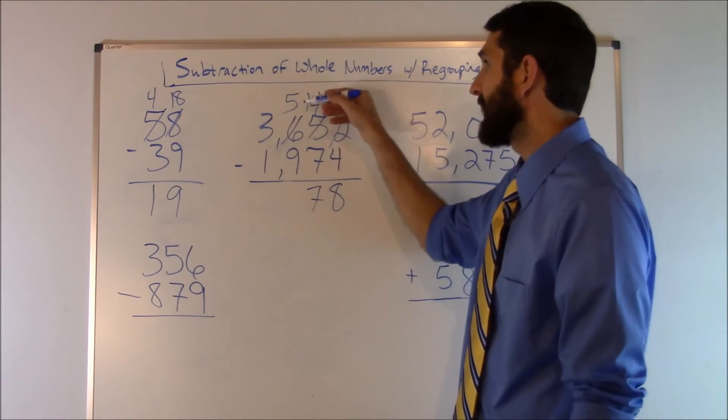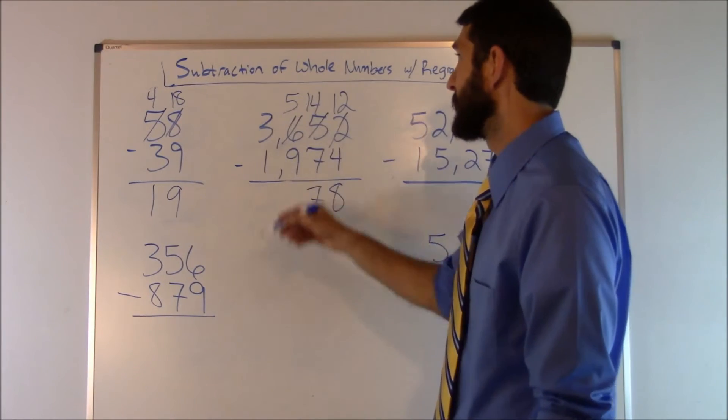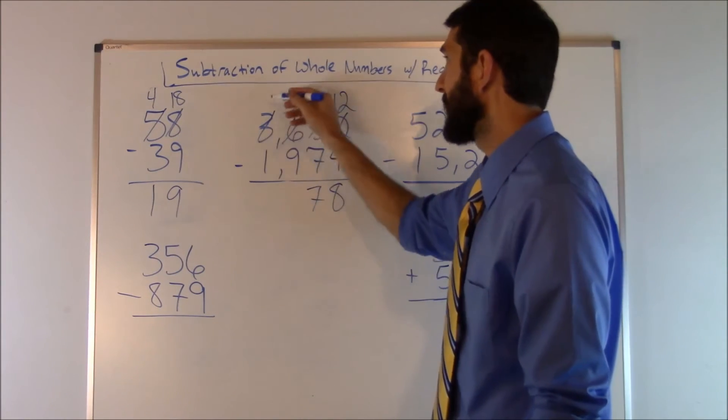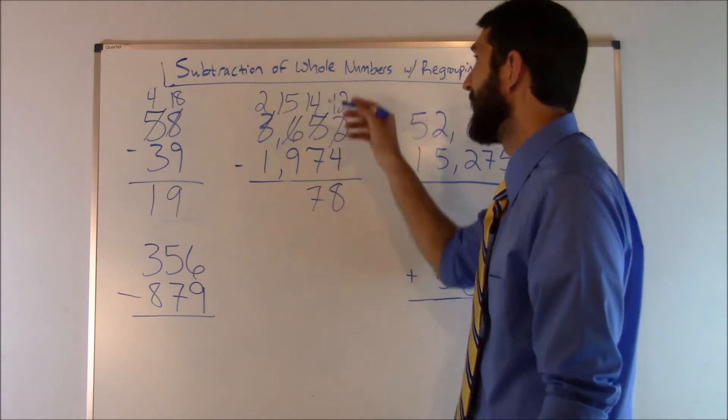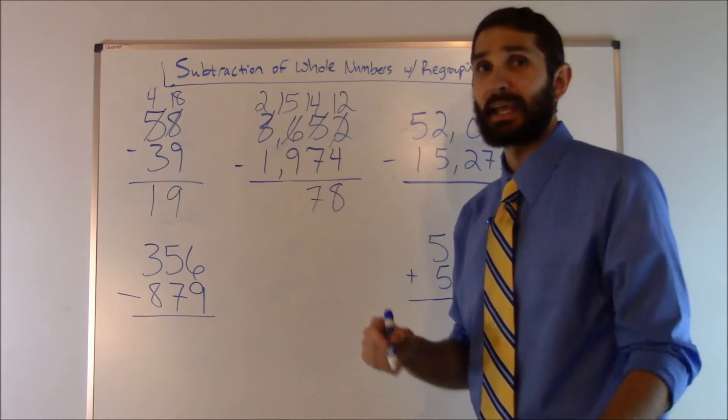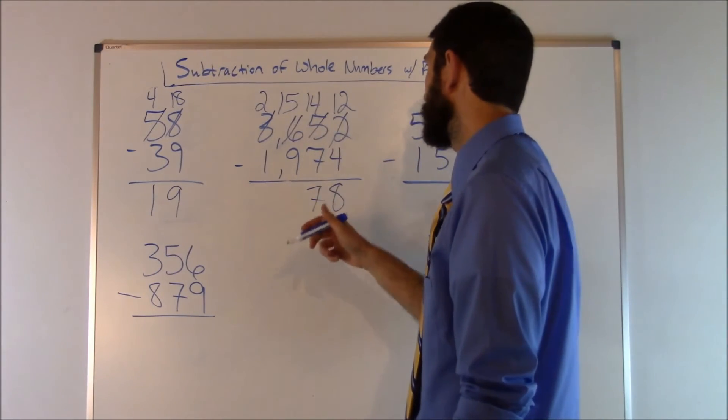Next we go here: five minus nine, and again we have to bum one off the neighbor because that won't work. So we go to the three. We do three minus one, that's going to give us two. We add ten back, that's going to give us fifteen. Fifteen minus nine. Can we do that? Yes. So we go ahead and we plug that in, which is going to be six.